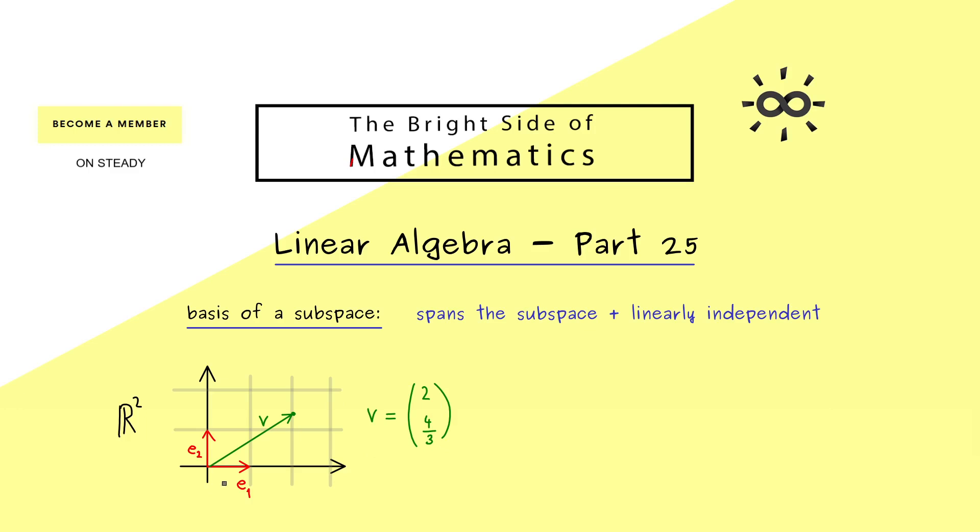So the vector v here can be described by coordinates. Therefore if we choose a different basis for the vector space R² we get different coordinates for the same vector. So let's visualize that again.